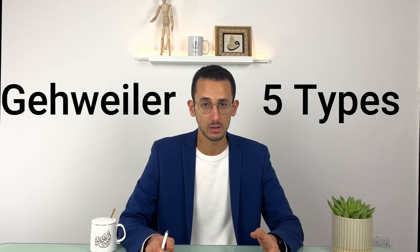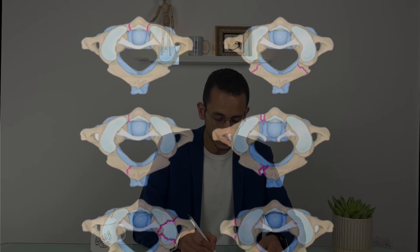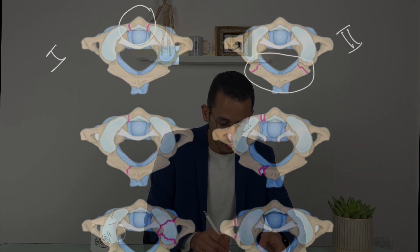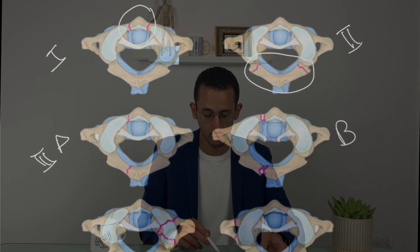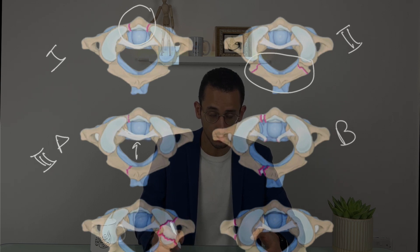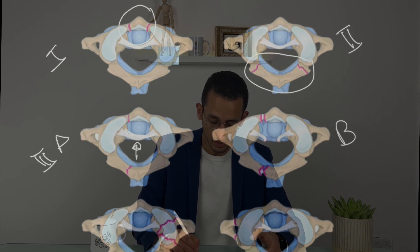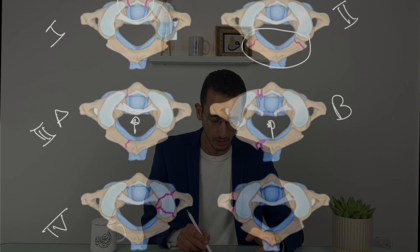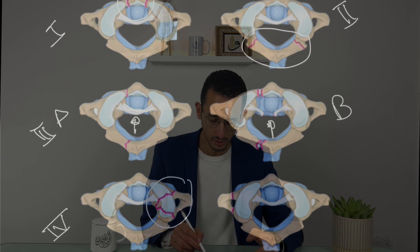There is another classification, the Gill-Wire classification, which divides C1 fractures into five types. Type 1 is a fracture through the anterior arch of C1. Type 2 is a fracture through the posterior arch of C1. Type 3 is a fracture through both the anterior and posterior arch, subdivided into Type 3a where the transverse atlantal ligament is intact, and Type 3b where it is disrupted. Type 4 is a fracture through the lateral mass, and Type 5 is a fracture through the transverse process.